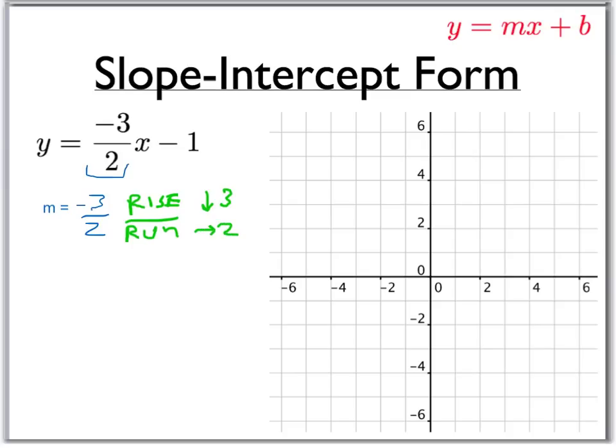Now we have our slope. Now how do we start? Where do we begin? Slope-intercept form gives us plus b, that is the y-intercept. In this case, our y-intercept is negative 1.